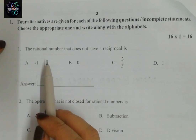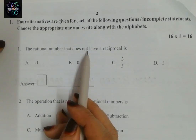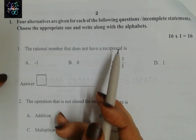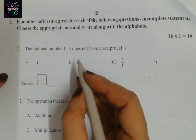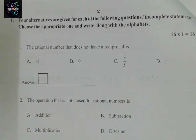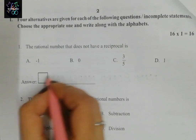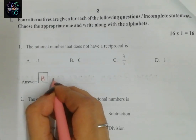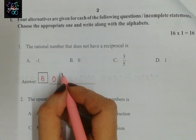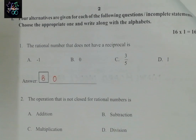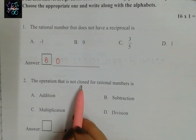Let us start solving. The rational number that does not have a reciprocal — we all know that is zero. So the correct answer is B: zero. Zero does not have a reciprocal.